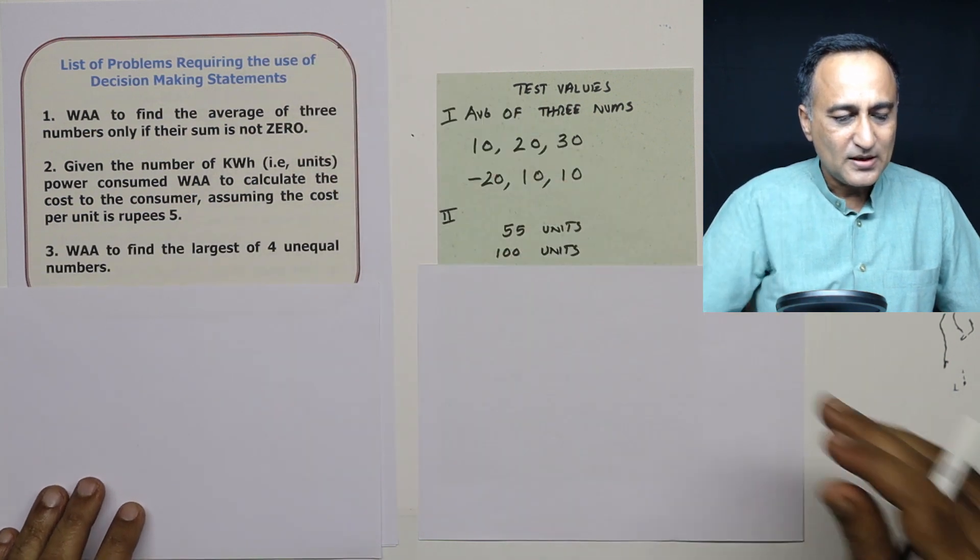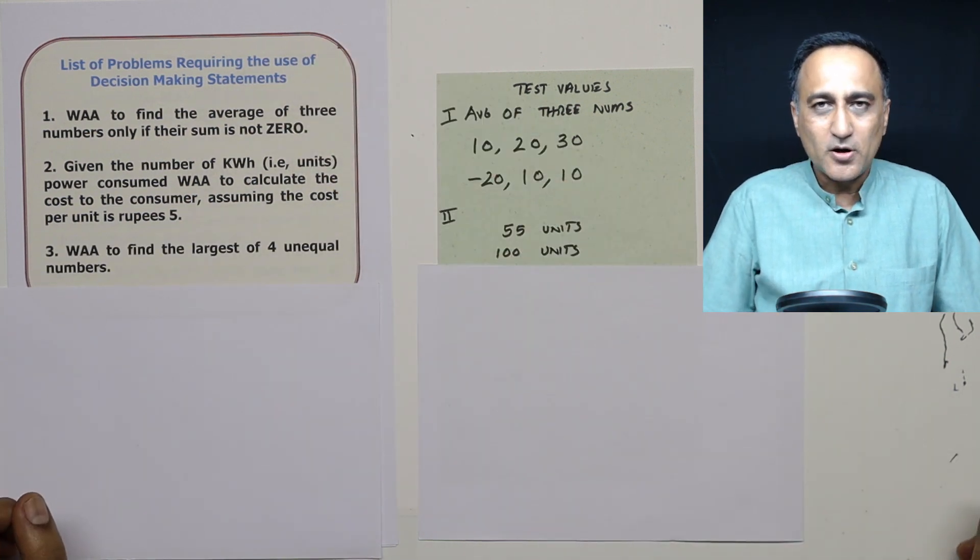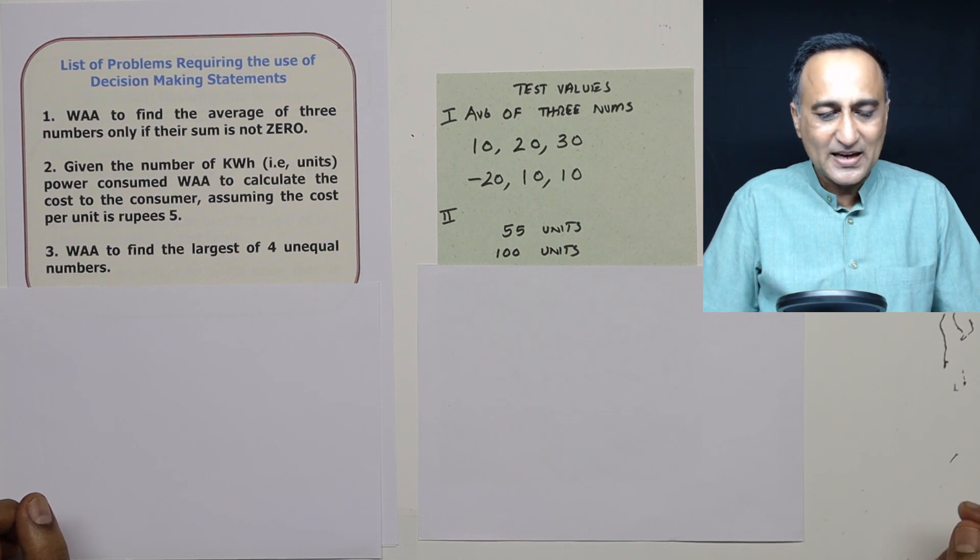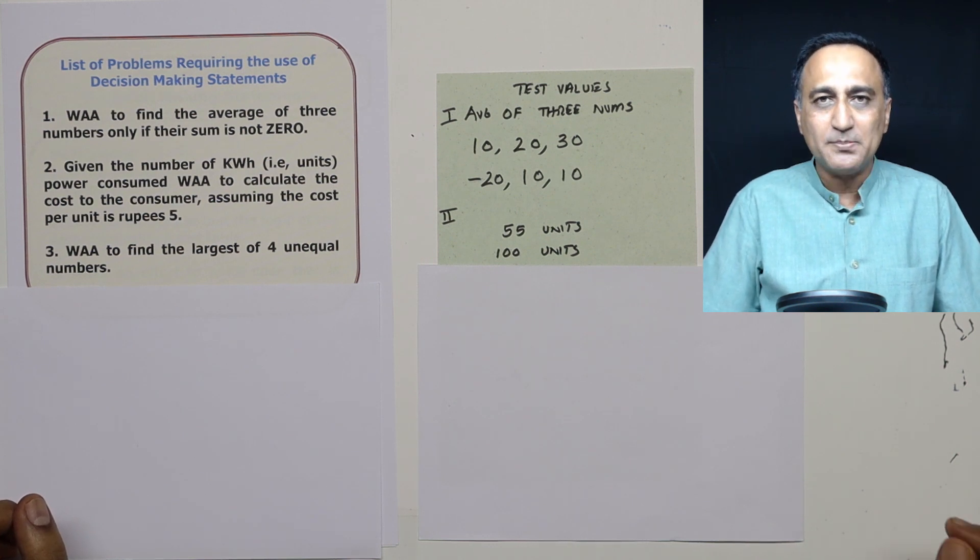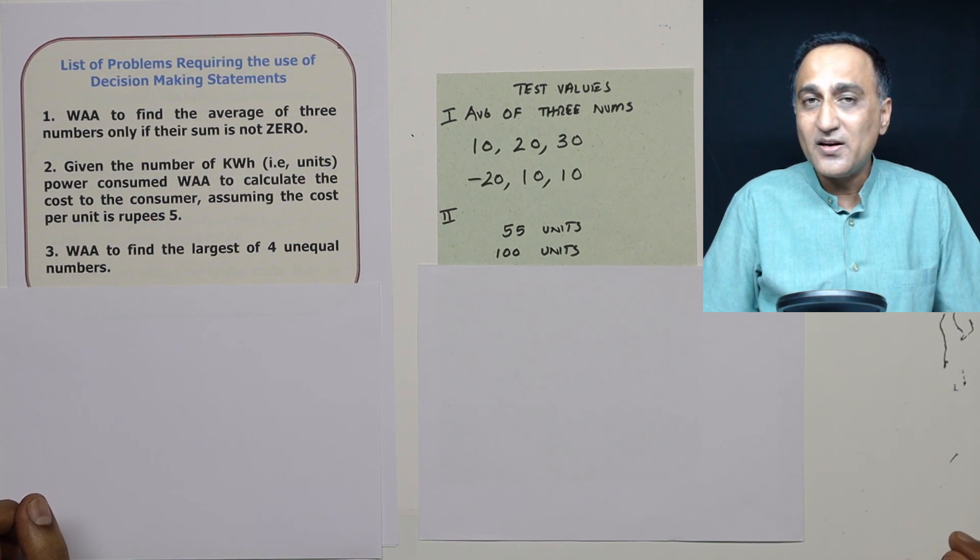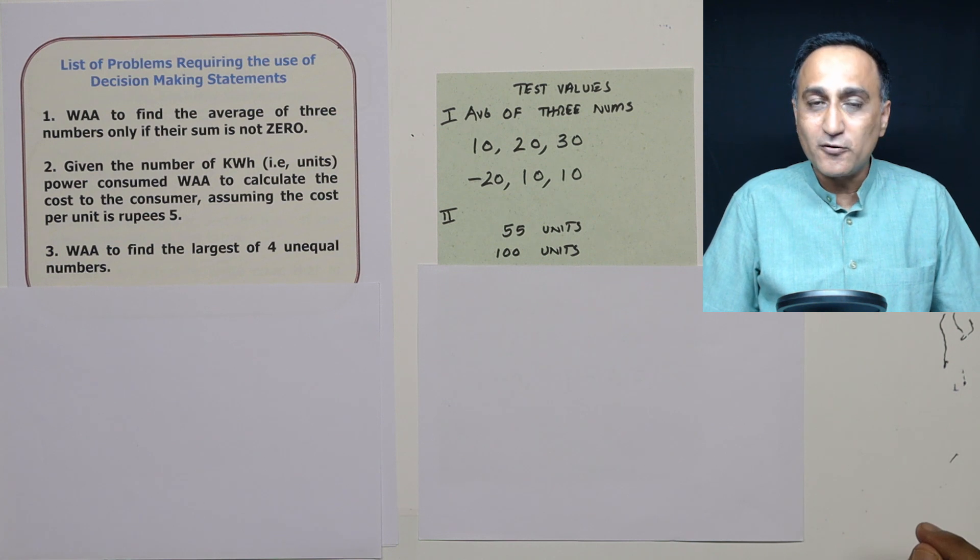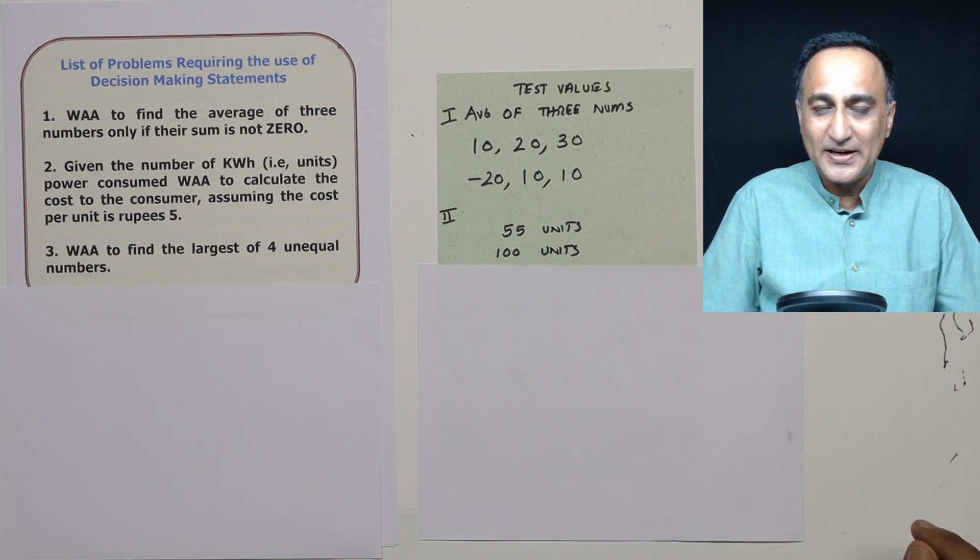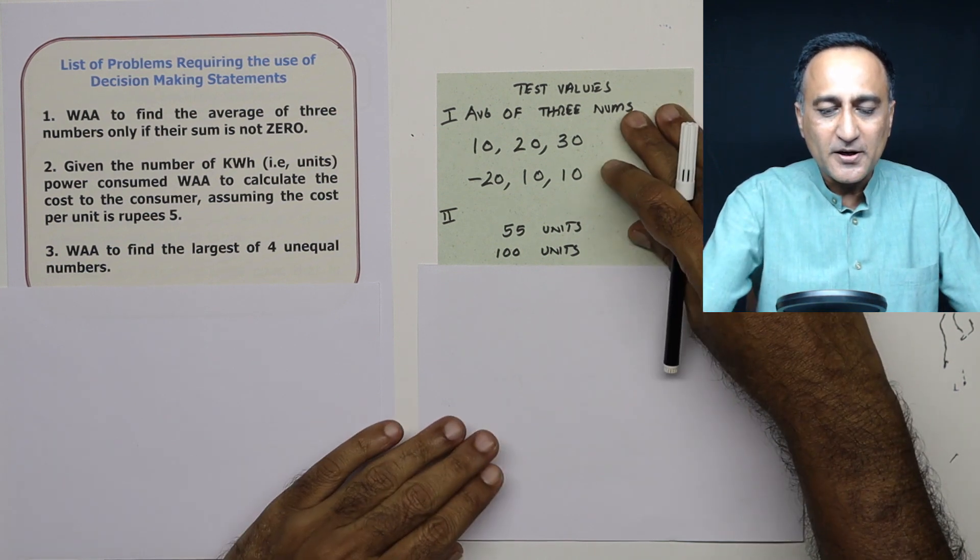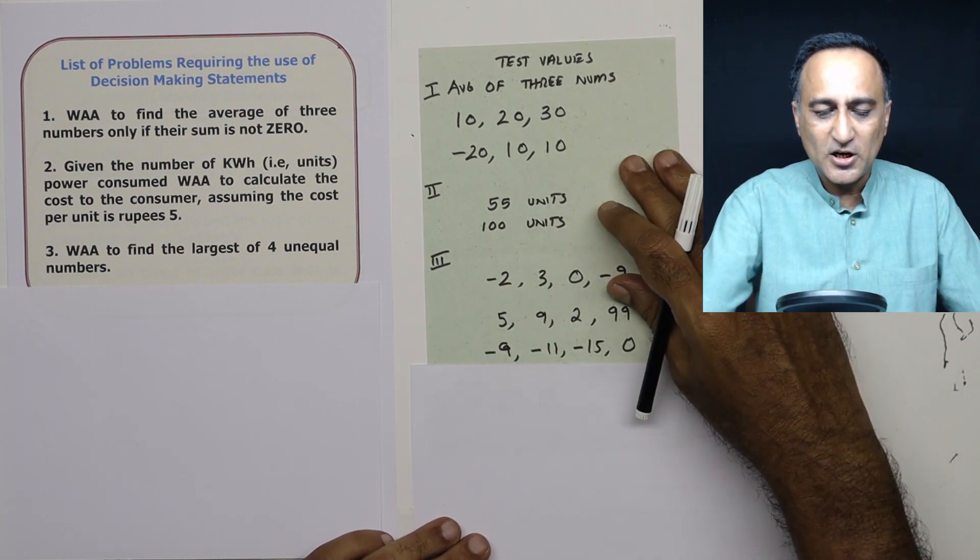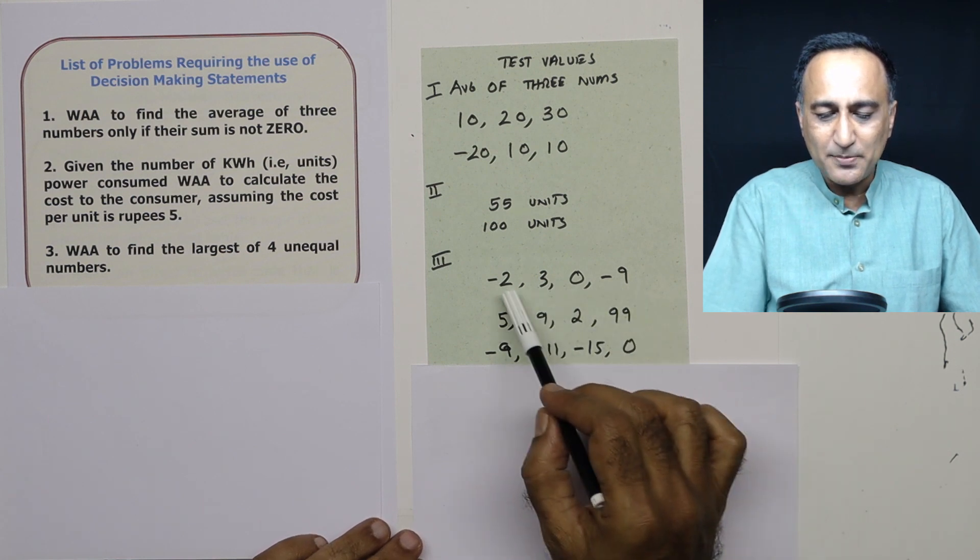The last problem in assignment or mini assignment 1, write an algorithm to find the largest of four unequal numbers. So for what we have done, we have found out the smallest of three numbers. Here, I'm asking you to find the largest of four unequal numbers. So this should not really be difficult.